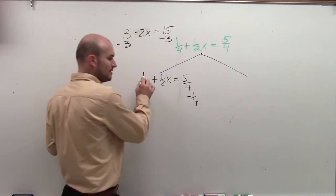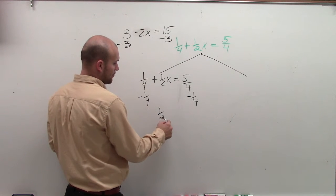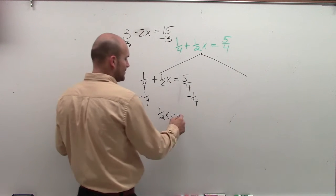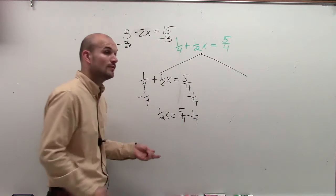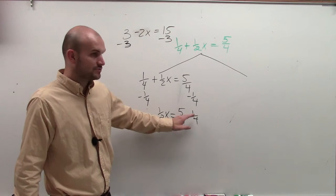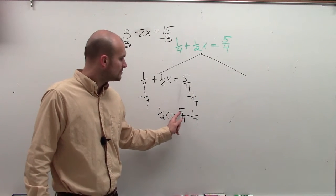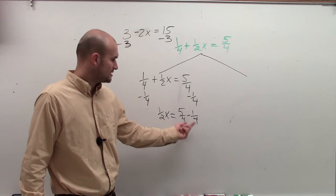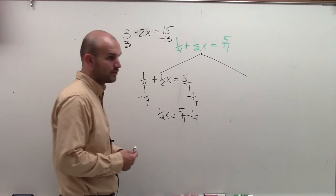So now 1/4 minus 1/4 is 0. 0 plus 1/2 x is just going to leave you with 1/2 x equals. Now we've got to do 5 over 4 minus 1 over 4. And it might be helpful to rewrite it in that format. Remember, when you add or subtract fractions, you have to make sure the denominators are the same. And then you subtract or add the numerators, and the denominator remains the same.